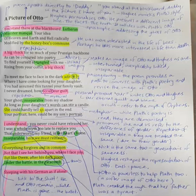A big shock to meet me face to face in the dark adit, where I have come looking for your daughter. You have assumed this tunnel your family vault. I never dreamed how occult our guilt. Your ghost inseparable from my shadow, as long as your daughter's words can stir a candle. She could hardly tell us apart in the end. Your portrait here could be my son's portrait.